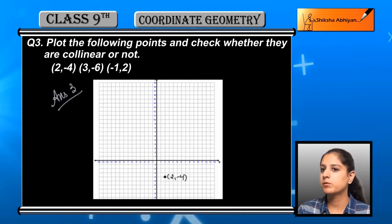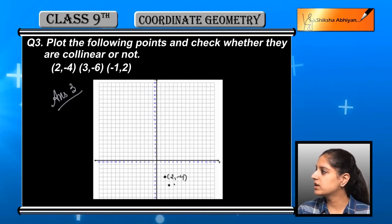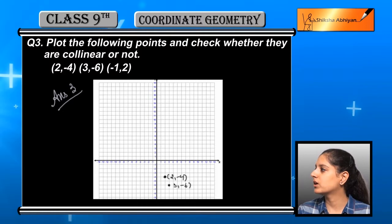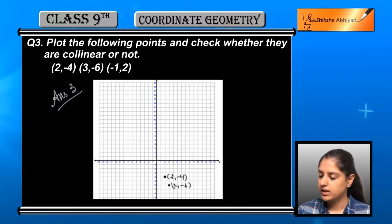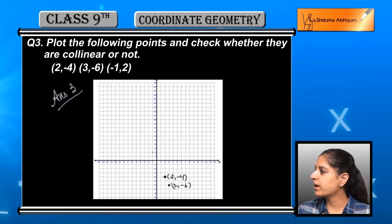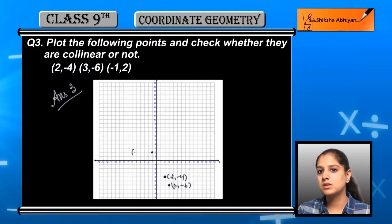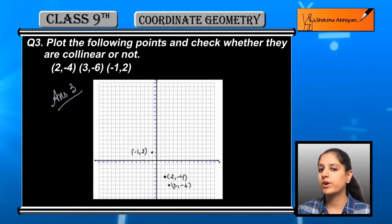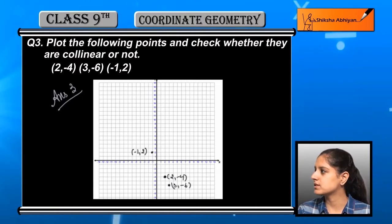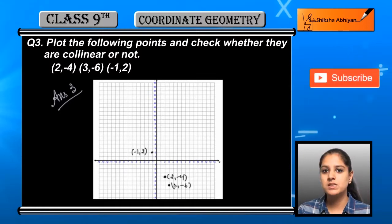We plot the point (2, -4), where 2 is the x-coordinate and -4 is the y-coordinate. Next, we have the point (3, -6), which is 3 units in the right-hand direction and -6 units downward. The last point is (-1, 2), where -1 is the x-coordinate and 2 is the y-coordinate.